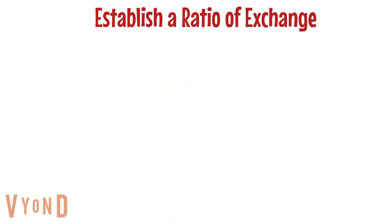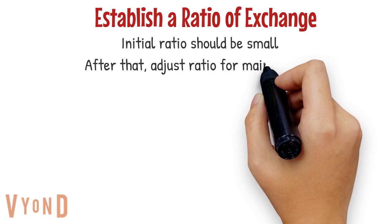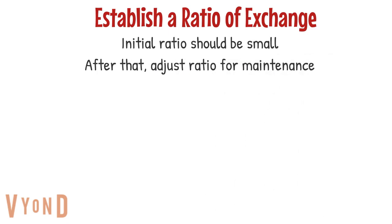Establish a ratio of exchange. The initial ratio should be small, and then adjust for maintenance. Initially you want them to earn a reinforcer when first teaching the exchange. After that, adjust by increasing the criteria, maybe changing the prices of certain things on the backup reinforcer menu, with continuous adjustment as the learner makes progress.